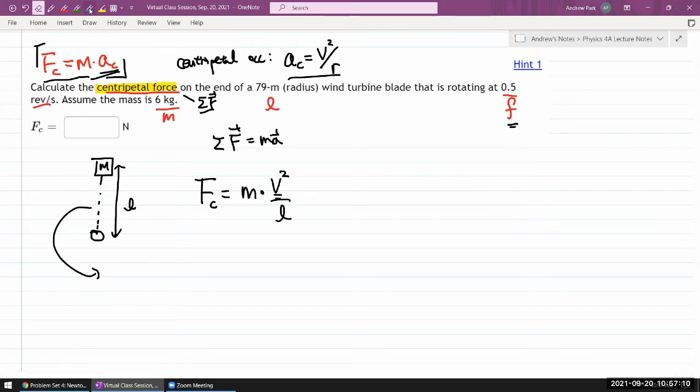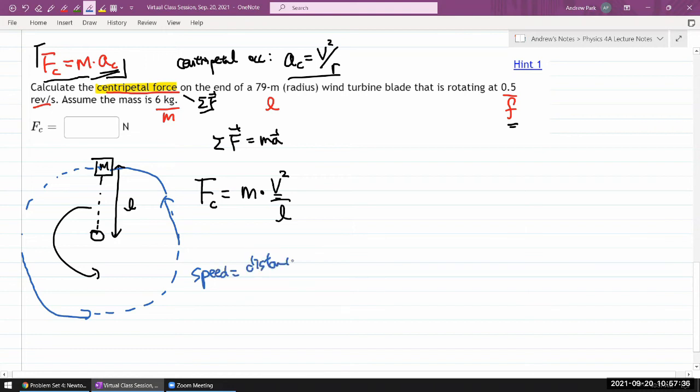So I need to figure out the velocity of this turbine. Let me just visualize its motion. It's going through these trajectories. With those trajectories in mind, if I want to calculate the speed, the tangential speed, well, speed is distance over time.